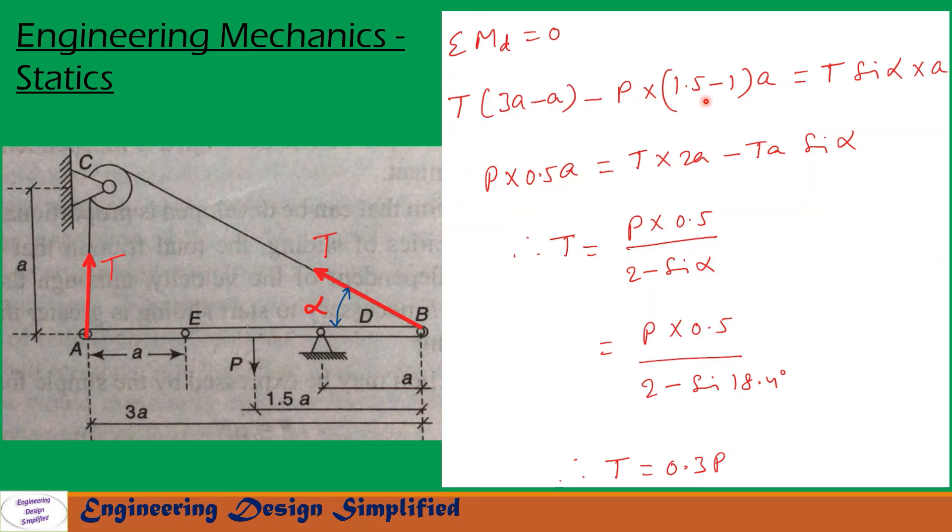This T produces counterclockwise moment about D. The component perpendicular to this bar will be T sin alpha and this distance is A. Moment due to this T about D can be written as T into sin alpha into A. That is written here.